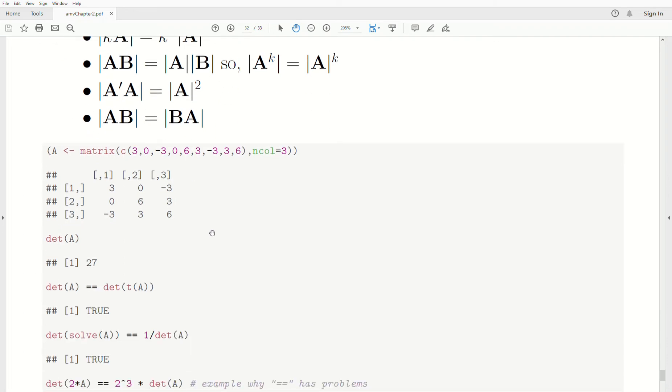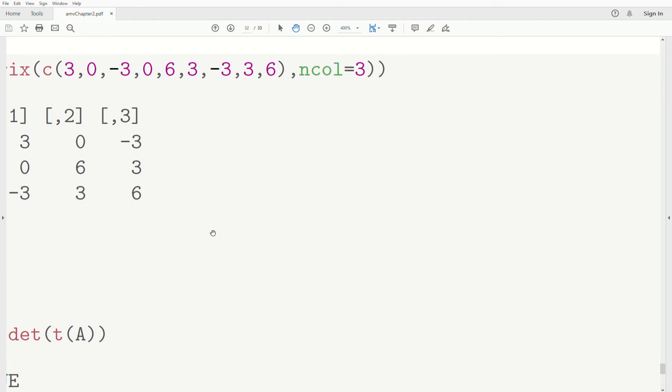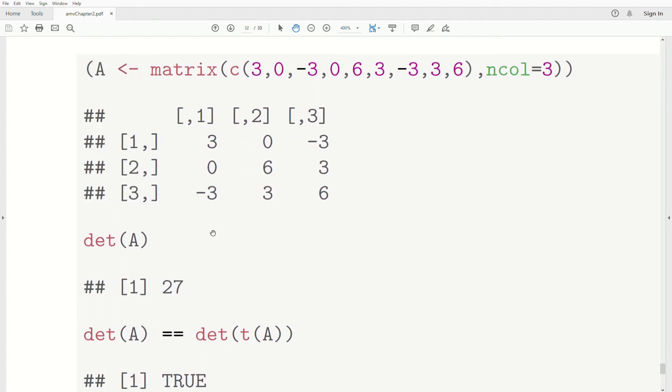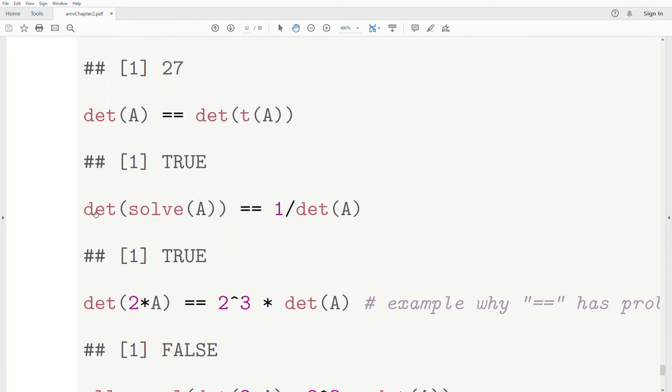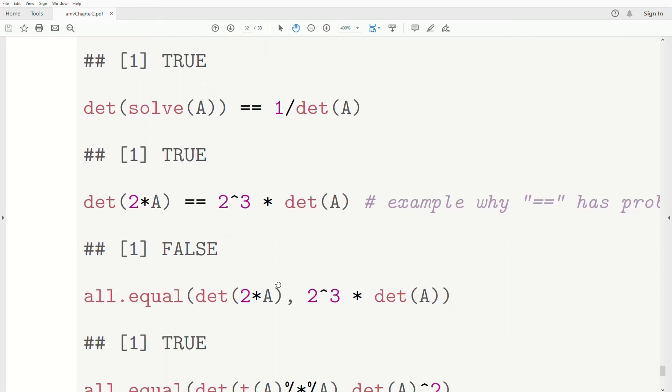And how would we take the determinant in R? So we have a matrix A. And the det function is the determinant of A. That's 27. Now, notice that the determinant of A, is that equal to the determinant of A transpose? And it's yes. Now, the determinant of A inverse is equal to one over the determinant. That's true.